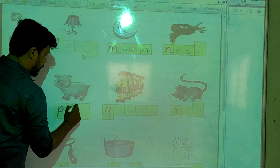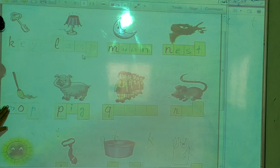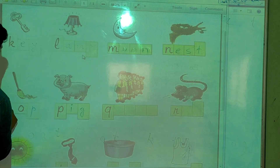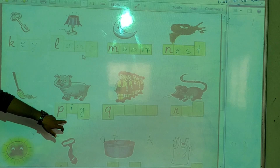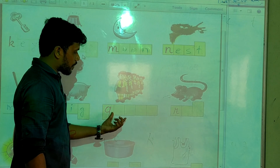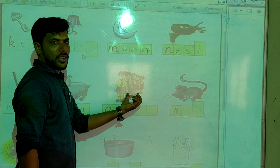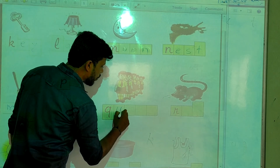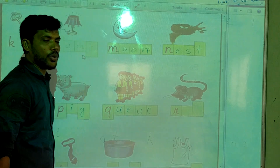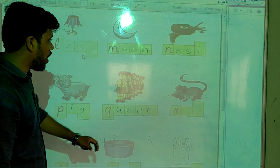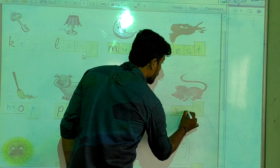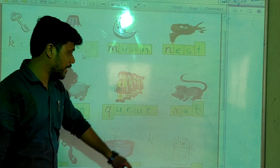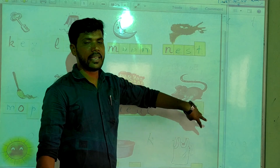And after M-N-O-P, next is Q. Q means, by seeing this picture, the students identify — queue. Q-U-E. After Q comes R. R — this is a rat. R-A-T.